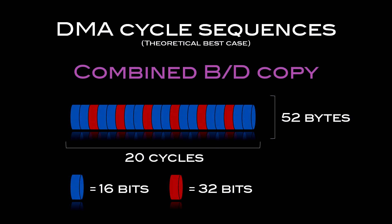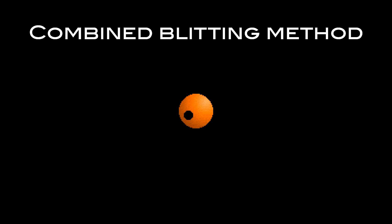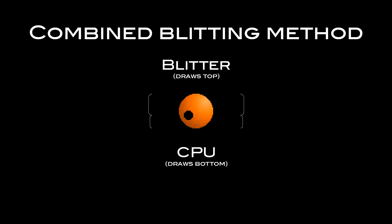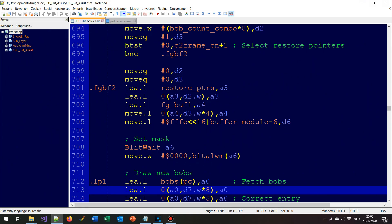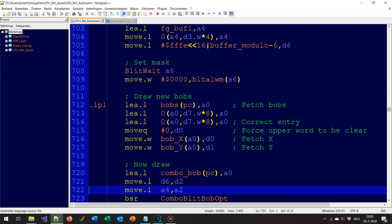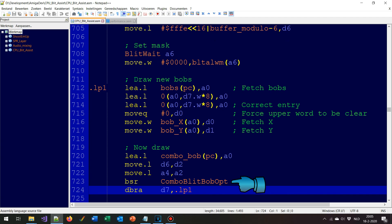It's worth pointing out that these DMA cycle sequences are theoretical. In the real world, the CPU will occasionally miss one of these DMA slots, causing a slight degradation in performance over what the theoretical best case shows. Having looked at the DMA cycle diagrams, the question becomes how do we actually combine the use of the CPU and the blitter for blitting bobs? The method I ended up with is actually surprisingly simple: we have the blitter blit the topmost part of the bob, and the CPU blit the bottom part. This can be done fairly easily in a single routine, which means we can simply call that routine instead of whatever routine we normally call when blitting a bob, making using this effect very simple.